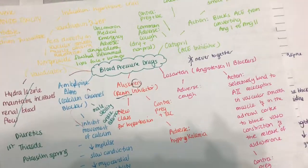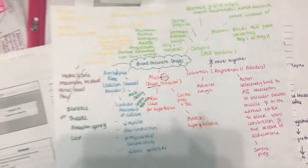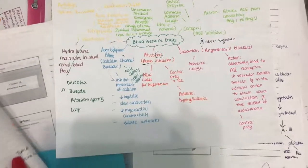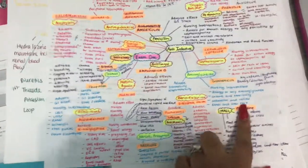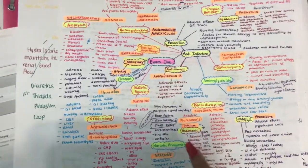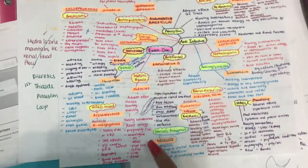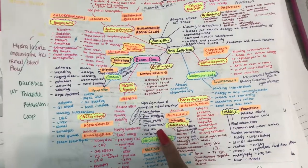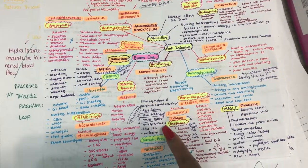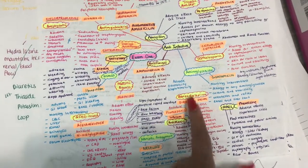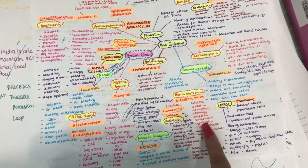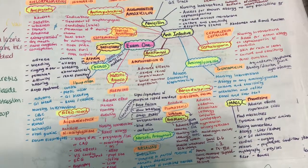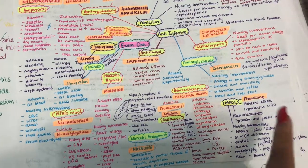Just write down the most important things because in the beginning of the semester, I did this map and this was way too much information for what the test was. This was what my exam number one was on, and I wrote down all the side effects. You have to study smarter, not harder.